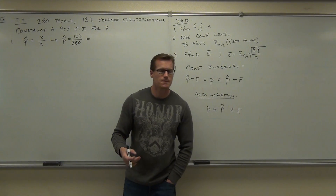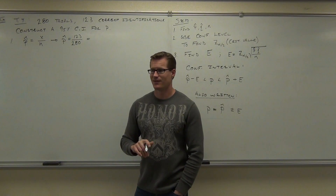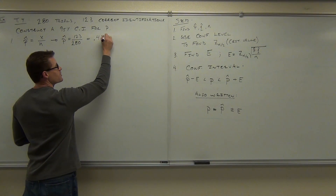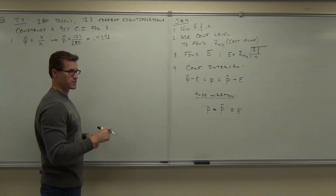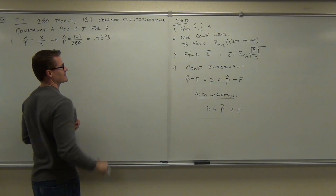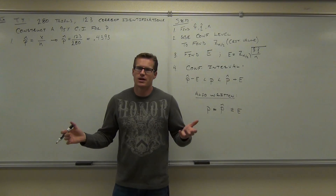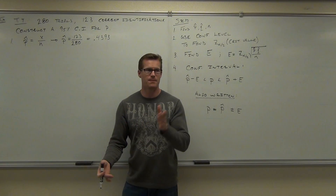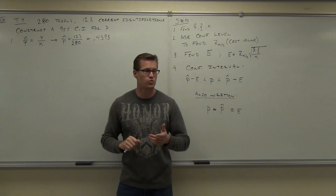Round as little as possible here. What is 123 divided by 280? 0.4? Well, I heard lots of people say 4s and stuff. What was it again? 0.3-9. Let's go to four decimal places so we're going to be pretty sure that we're not going to make any rounding errors. Proportions — you know that this means 43.93%, right? 43.93% of the time this woman guessed correctly or identified it correctly. If you just did 0.44, that might be a little bit too much rounding when you get to this step.